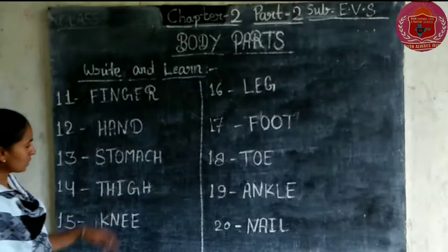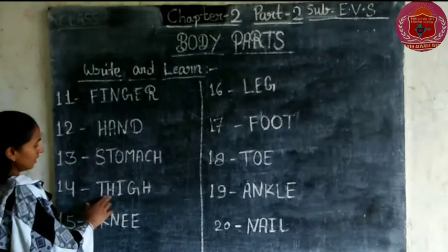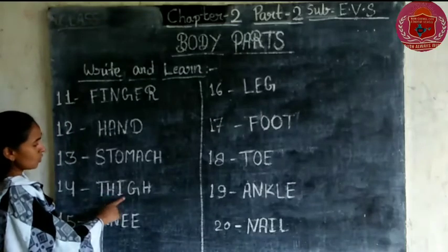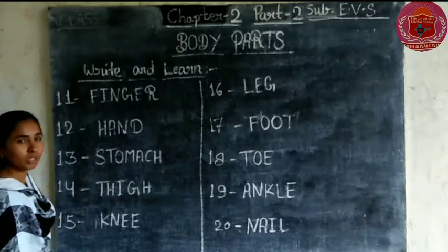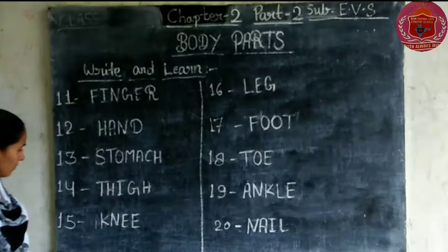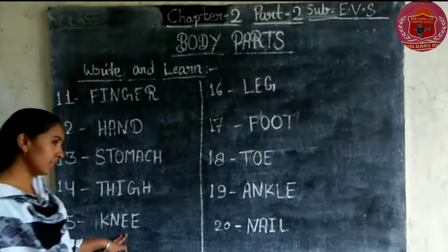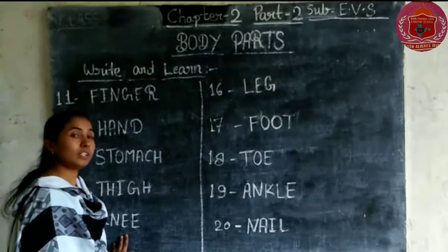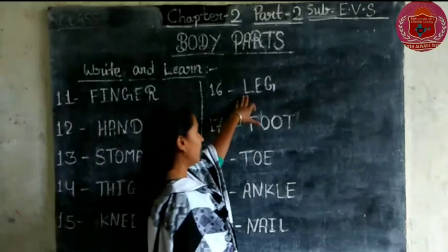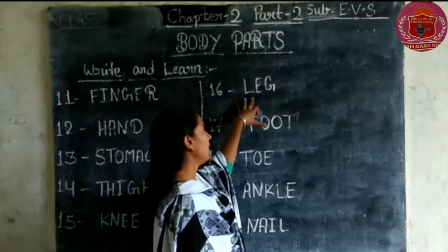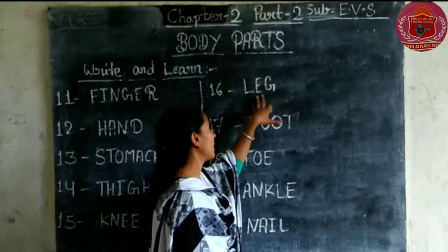Thigh. T-H-I-G-H. Thigh means jaan. K-N-E-E. Knee means ghutna. Leg. L-E-G. Leg means pair.